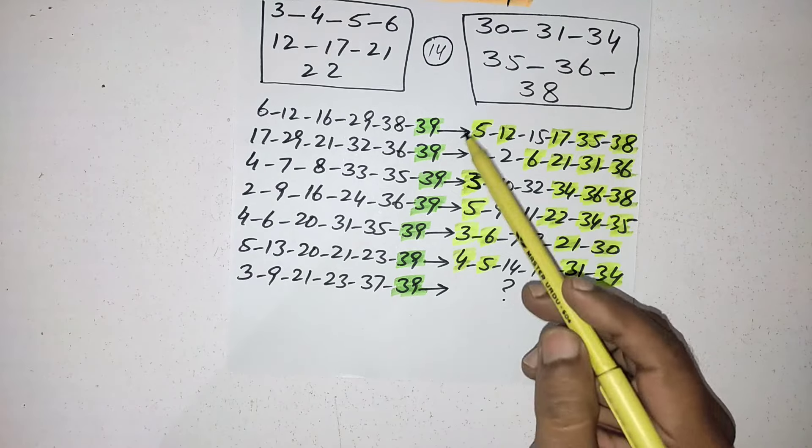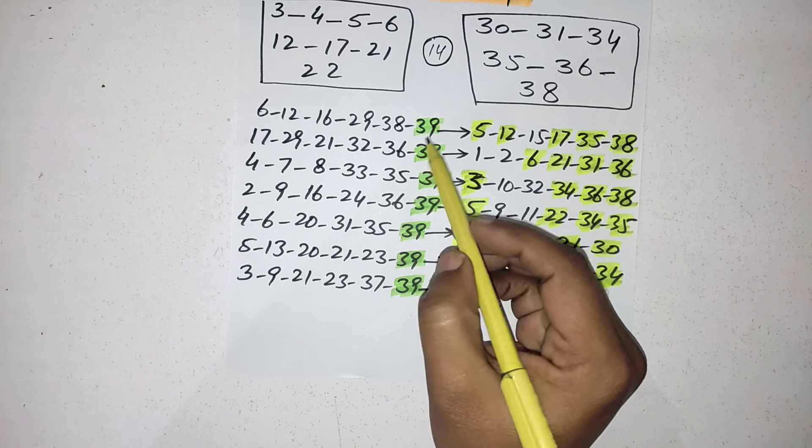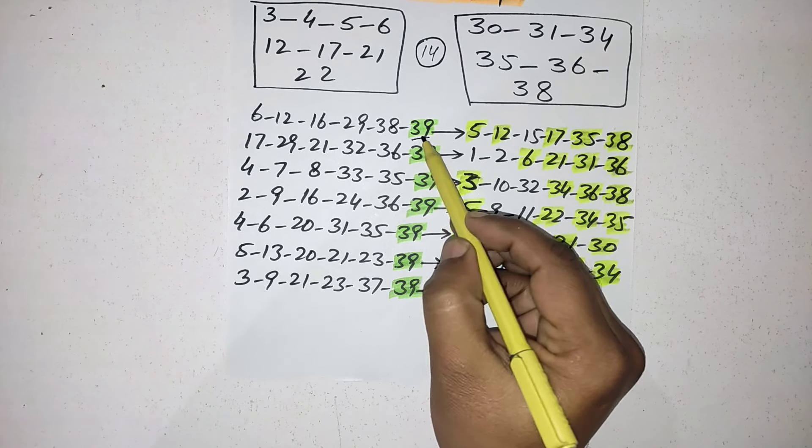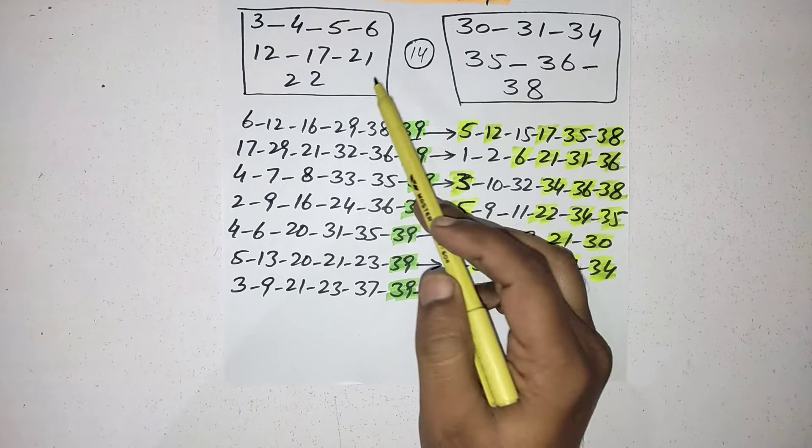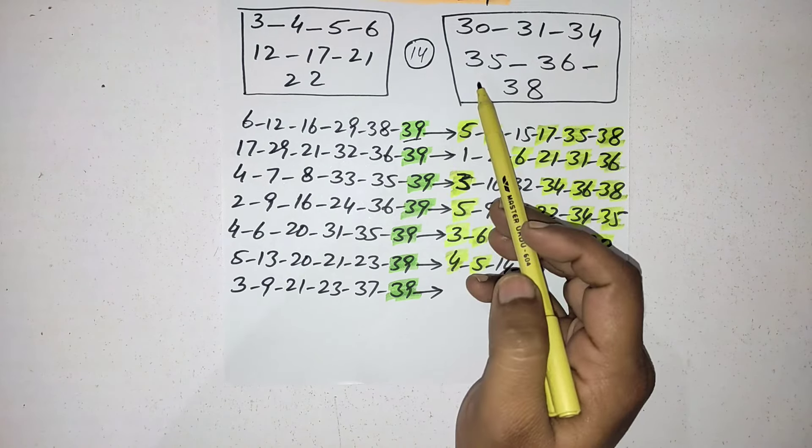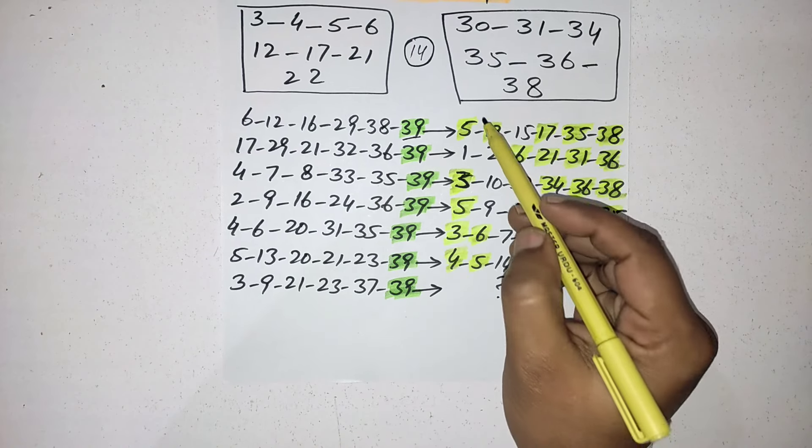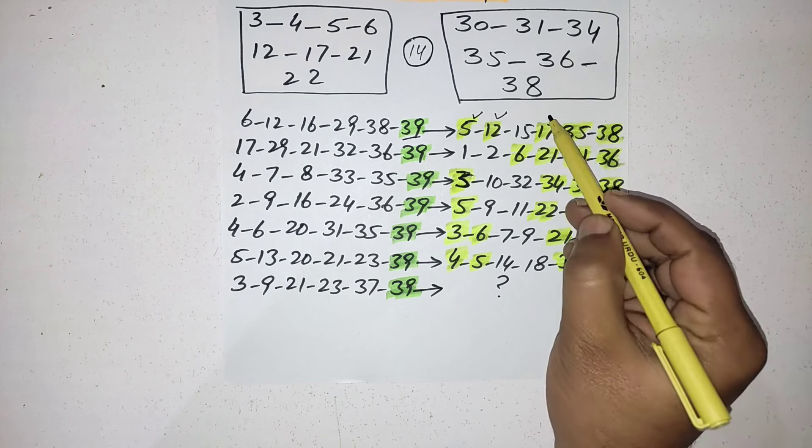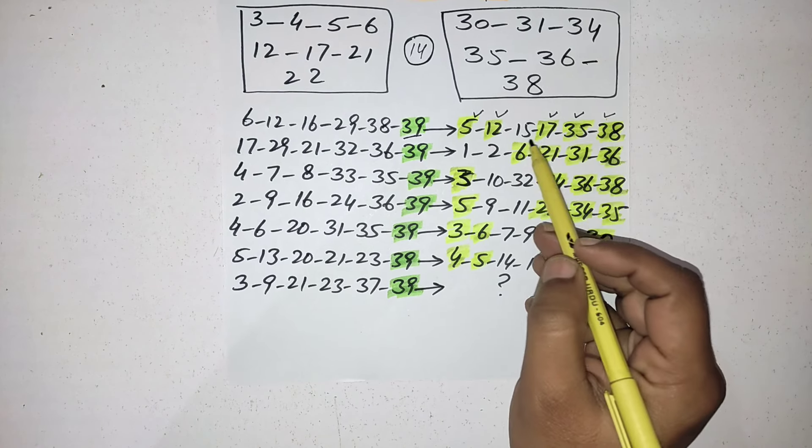I am going to show you the history. Whenever in Easy 6 the last number came as biggest number 39, after that most numbers picked from these two boxes. First time when 39 came, you can see 5, 12, 17, 35, 38 - five numbers out of six came from these numbers.